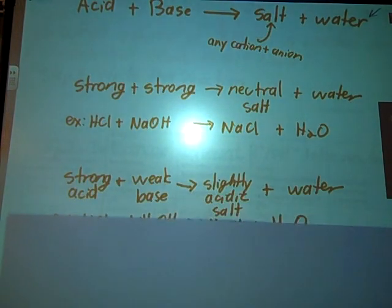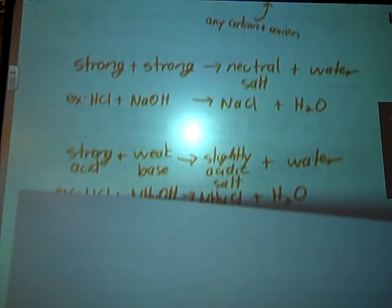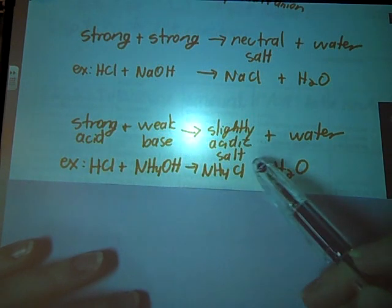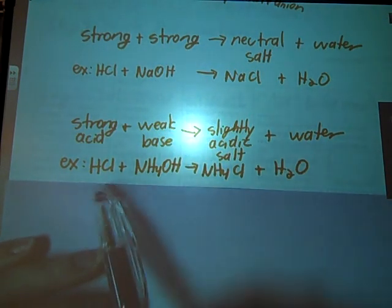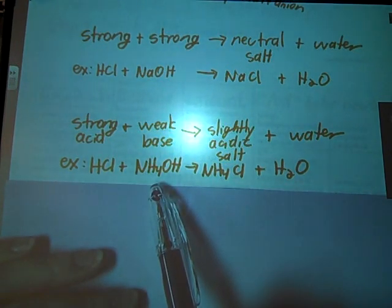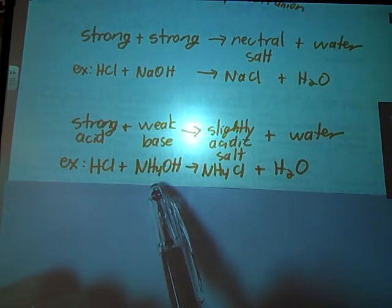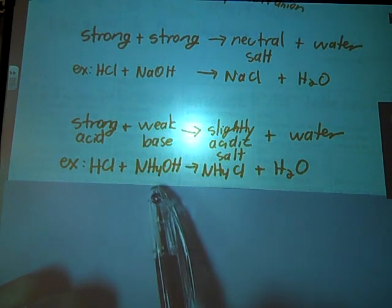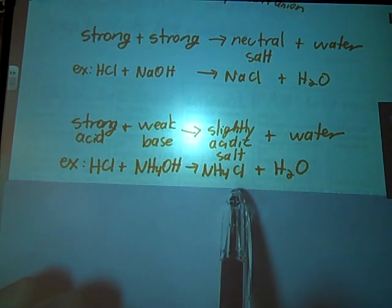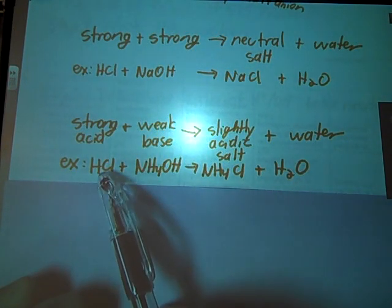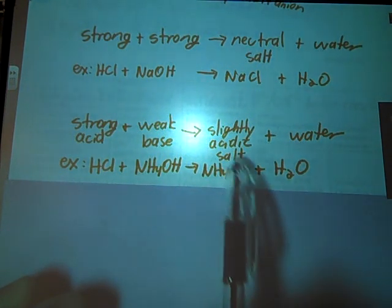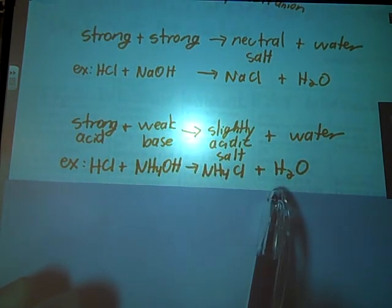When I mix together a strong acid and a weak base, that acidic character holds over into my salt. So my salt is slightly acidic. HCl is a strong acid once again. Ammonium hydroxide is actually a weak base. And when we mix those two together, we get a slightly acidic salt. This NH4 here and the Cl, the Cl lost an H+. We have a slightly acidic salt here and our water.